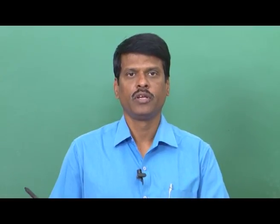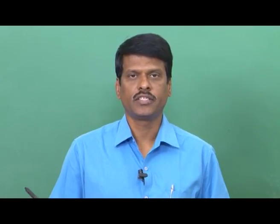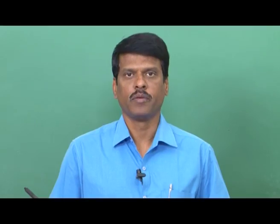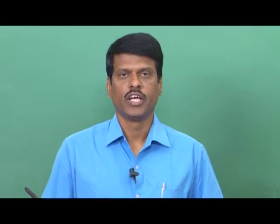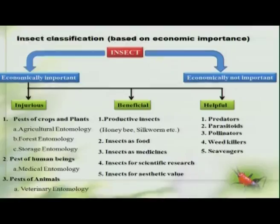Basically, insects as a group can be related to human beings in two different ways. For example, the insects which are economically important and those groups of insects which are not economically important — it is from the human point of view. Under the insects which are economically important group, we are more interested in them, and we are ignoring the insects which are not economically important.